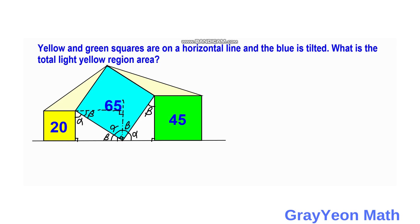Next, we draw a line from the topmost part of the figure downwards, forming another right triangle. Since this is a square with a 90 degree angle, this beta should have a complementary angle, which is alpha. Since we formed a right triangle again, this should be beta.